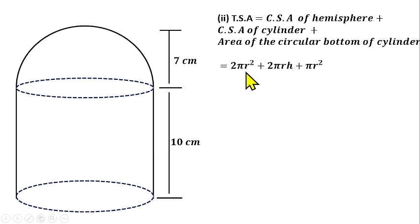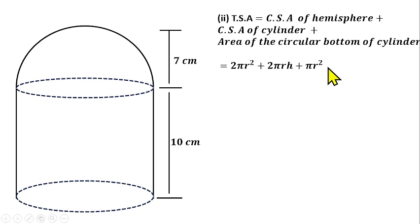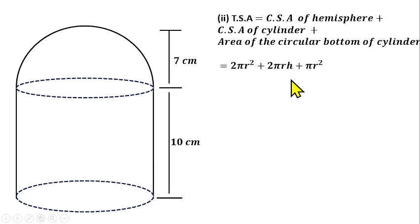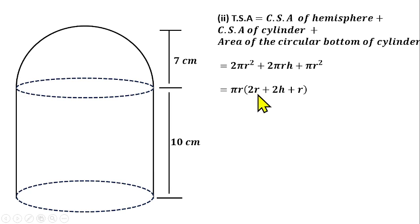So total surface area = 2πr² + 2πrh + πr². Factorizing, πr is common throughout, giving us: πr × (2r + 2h + r). Simplifying, 2r + r = 3r, so we have: πr × (3r + 2h).